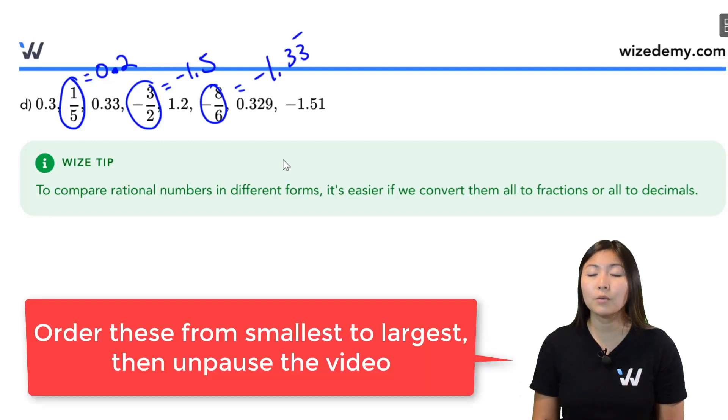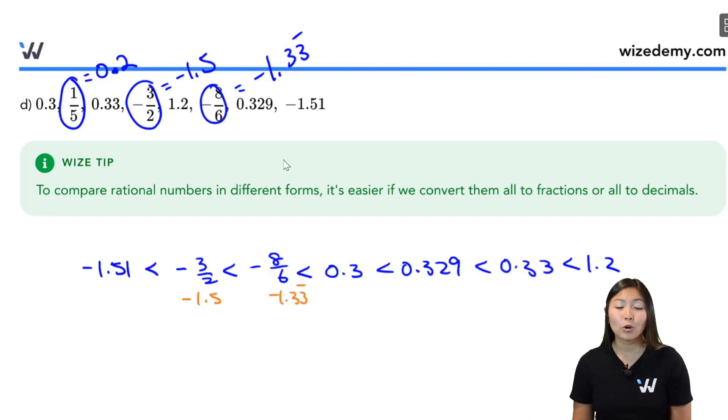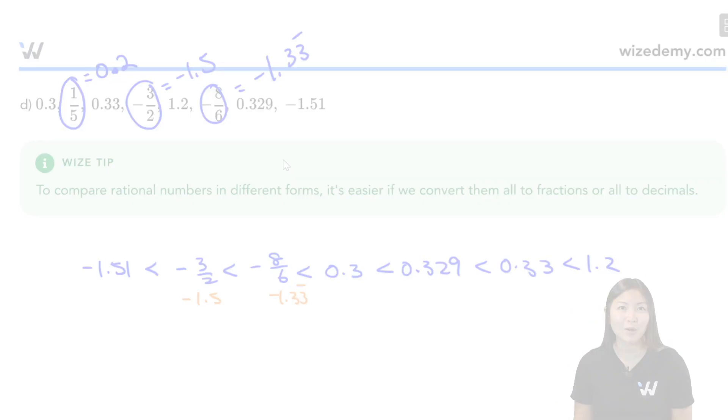So I'm going to pause the video, go ahead and order these numbers in the right order from smallest to largest. So hopefully this is the list of numbers that you got. If not, double check this video and feel free to leave me a question.